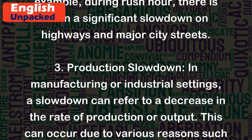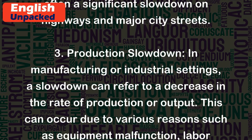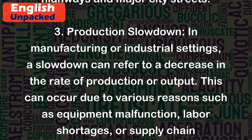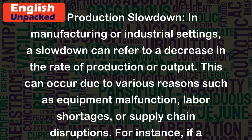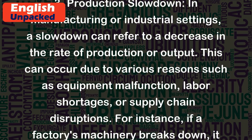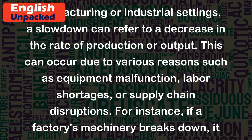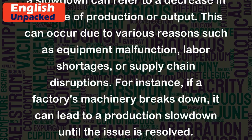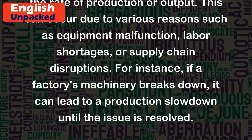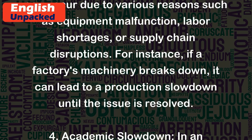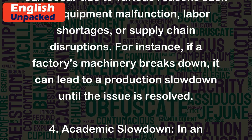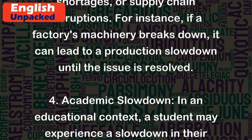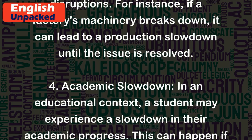3. Production Slowdown. In manufacturing or industrial settings, a slowdown can refer to a decrease in the rate of production or output. This can occur due to various reasons such as equipment malfunction, labor shortages, or supply chain disruptions. For instance, if a factory's machinery breaks down, it can lead to a production slowdown until the issue is resolved.